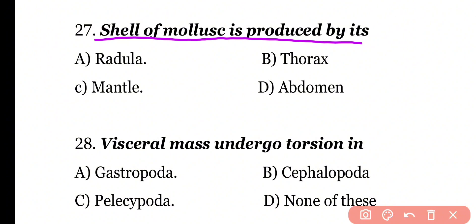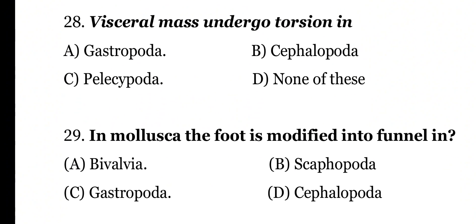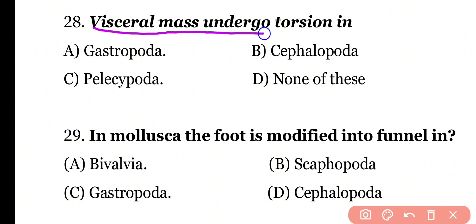Question number 27: The shell of a mollusca is produced by which part? Options: Radula, Thorax, Mantle, Abdomen. Correct answer is option C. The mantle cavity produces the shell of the mollusca.